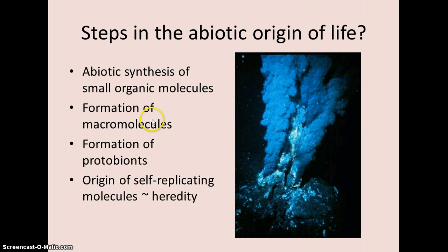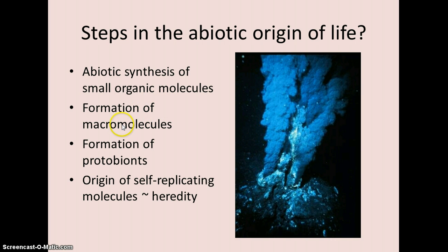Here we're going to talk about the origins of the first living things. It starts with the famous Miller-Urey experiments, in which they were able to synthesize simple organic molecules from simpler inorganic molecules under the right conditions. And then once you have those simple organic molecules, you can make larger ones — from amino acids you can make proteins, and from basic fatty acids you can make lipids.